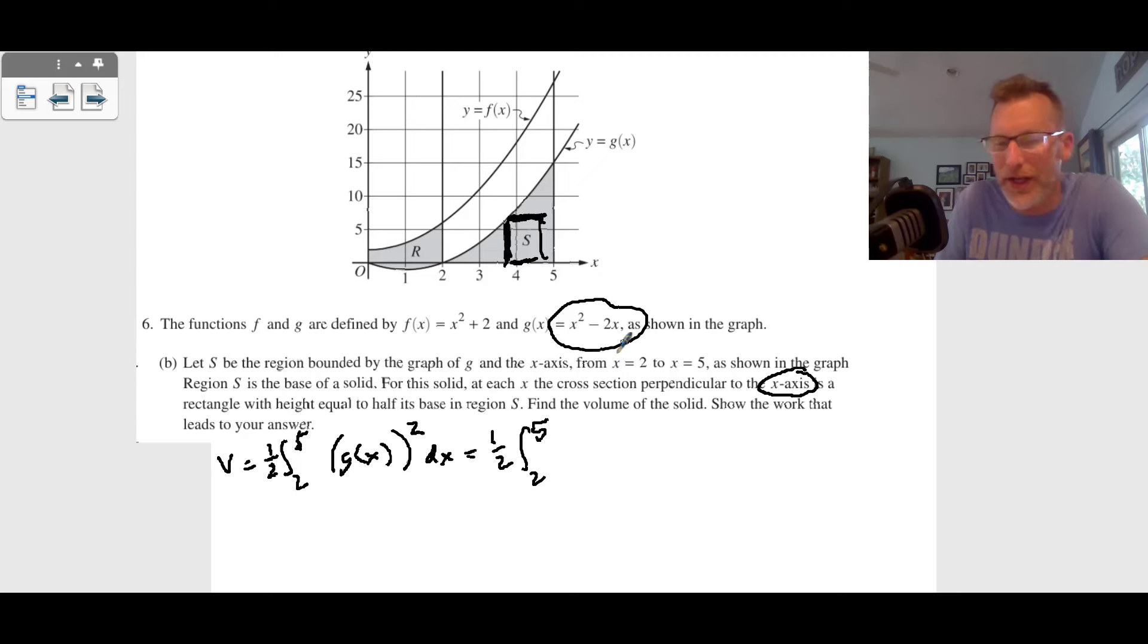We're going to have to take this g(x). We're going to have one half from two to five, and we're going to have to do x squared minus two x squared. We can't really do u-substitution here, so we're going to have to foil this out. So we have x to the fourth, we have negative two x times x squared, that's negative two x cubed. Together, negative four x cubed, plus at the end negative two x times negative two x, plus four x squared dx.